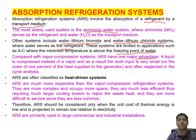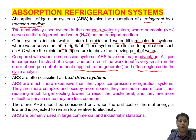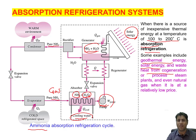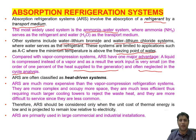Compared with vapor compression refrigeration systems, ARS have one major advantage: a liquid is compressed instead of a vapor. As a result, the work input is very small — on the order of one percent of the heat supplied to the generator. We usually neglect the pump work, and the only requirement for this cycle is the energy source, such as solar energy. ARS are classified as heat-driven systems.